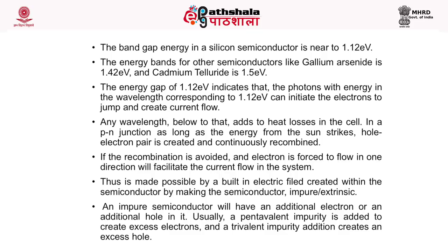Any wavelength below that adds to heat losses in the cell. In a p-n junction, as long as energy from the sun strikes, electron-hole pairs are created and continuously recombined. If recombination is avoided and the electron is forced to flow in one direction, it will facilitate current flow in the system. This is made possible by a built-in electric field created within the semiconductor by making it impure or extrinsic. An impure semiconductor will have an additional electron or an additional hole. A pentavalent impurity is added to create excess electrons and a trivalent impurity addition creates an excess hole.